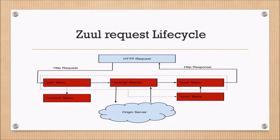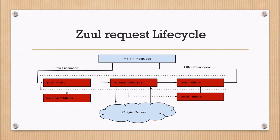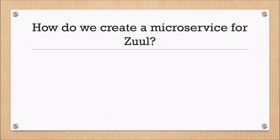Zuul request lifecycle: In this diagram you can see how an HTTP request connects to the origin server and sends a response back to the client. The first filter is pre filters, then routing filters, then it connects to the origin server and returns back to routing filters, then it calls the post filters, and at last sends the response back to the client. In this video we will use the pre filter.